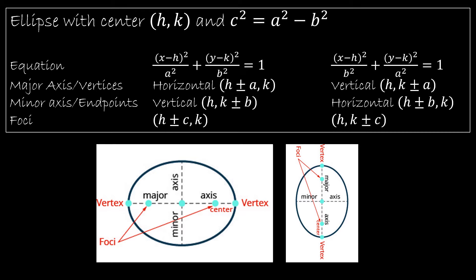And we have the relationship that c squared is equal to a squared minus b squared. And c squared is not going to be in our equation, but we will have to find c so that we can determine the foci. So let's take a look at what we know.